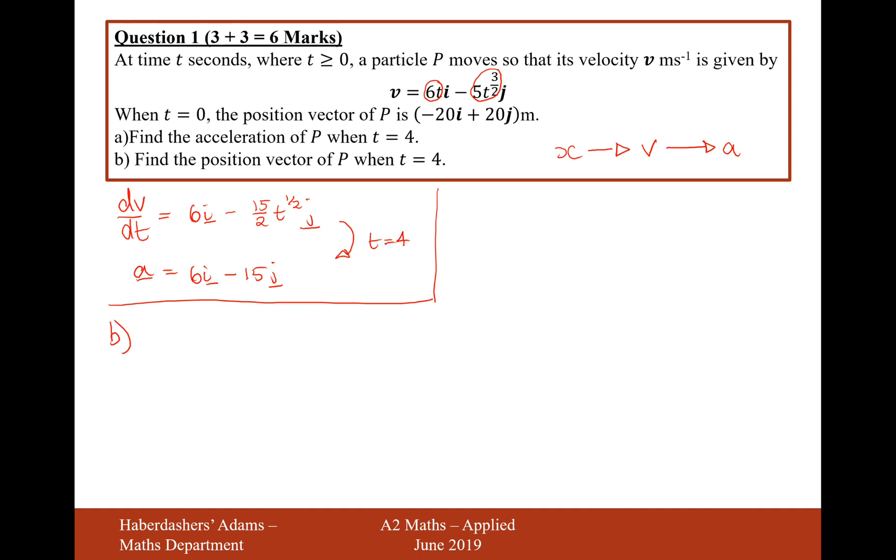Let's move on to part b now, the position vector of v when t equals 4. So what we need to do now is to get from velocity back to displacement to get the position vector. So in that case, we're going to have to integrate. We're going to have to integrate 6ti minus 5t to the power of 3 over 2j with respect to t. So let's go ahead and do that then.